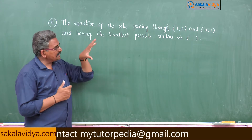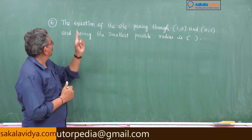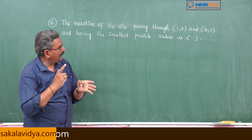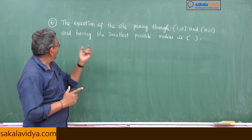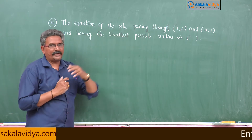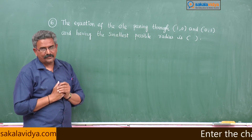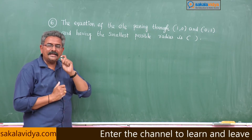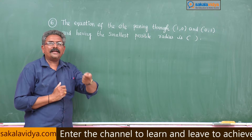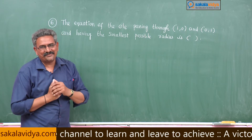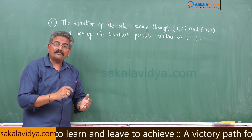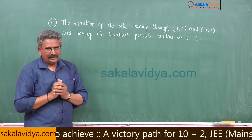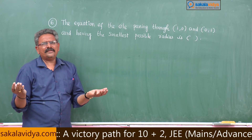Otherwise, on a concept basis: the equation of the circle passing through (x1, y1) and (x2, y2) having the smallest possible radius is nothing but the circle whose endpoints of the diameter are (x1, y1) and (x2, y2). If (x1, y1) and (x2, y2) are the ends of the diameter of a circle, then we can easily find the equation of the circle.